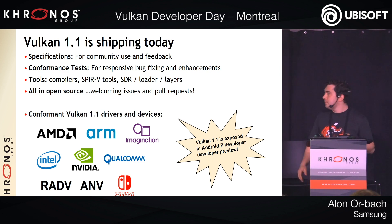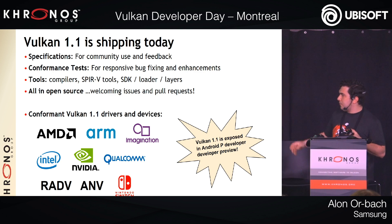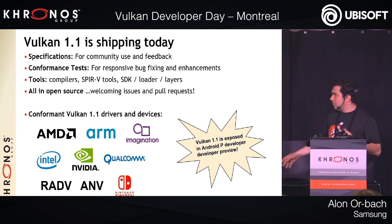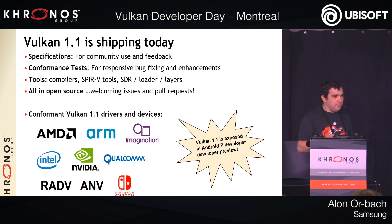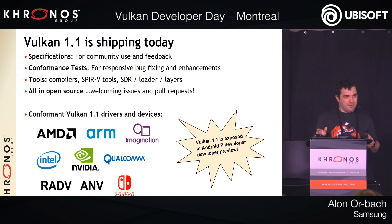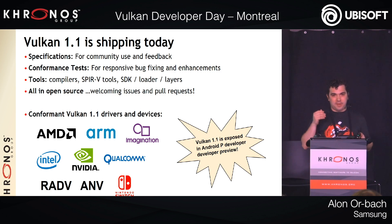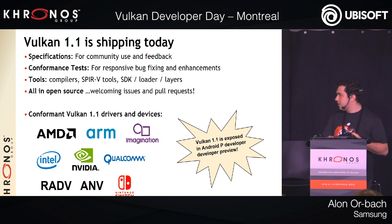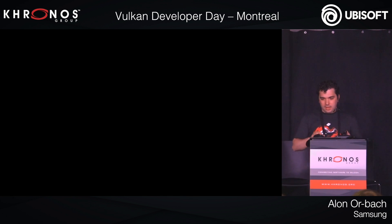Vulkan 1.1 is shipping today across different devices — there are many conformant implementations, and Android P developer preview already has it. We really want feedback on the specifications, conformance tests, and tool chains. If you've hit a driver bug, please tell us so we can make sure it's covered in the conformance tests. That's me — and now I'll hand over to Bill to talk you through render passes.